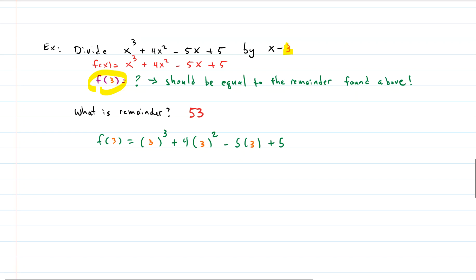So f of 3, we plug in 3 for all the x's. And what do we get? Well, 3 cubed is 27. 4 times 3 squared is 36. 5, negative 5 times 3 is 15. And plus 5. So we have the negative 15 and 5 gives us negative 10. And that gives us positive 26 when we add it to that. So we get 27 plus 26. Oh man. 27 plus 26.